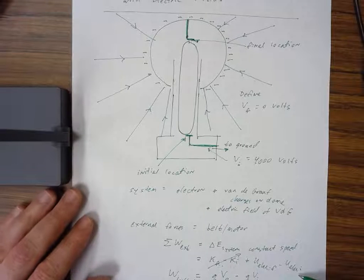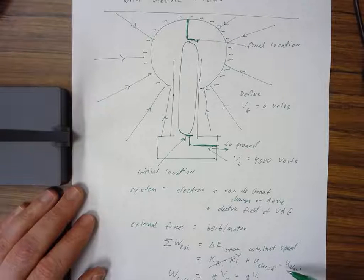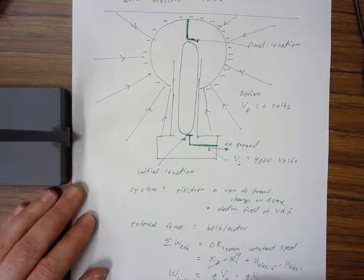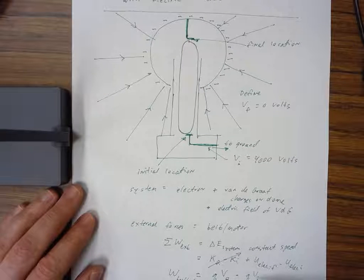We've learned that the electric potential energy of a system is related to the voltage at different locations in that system.